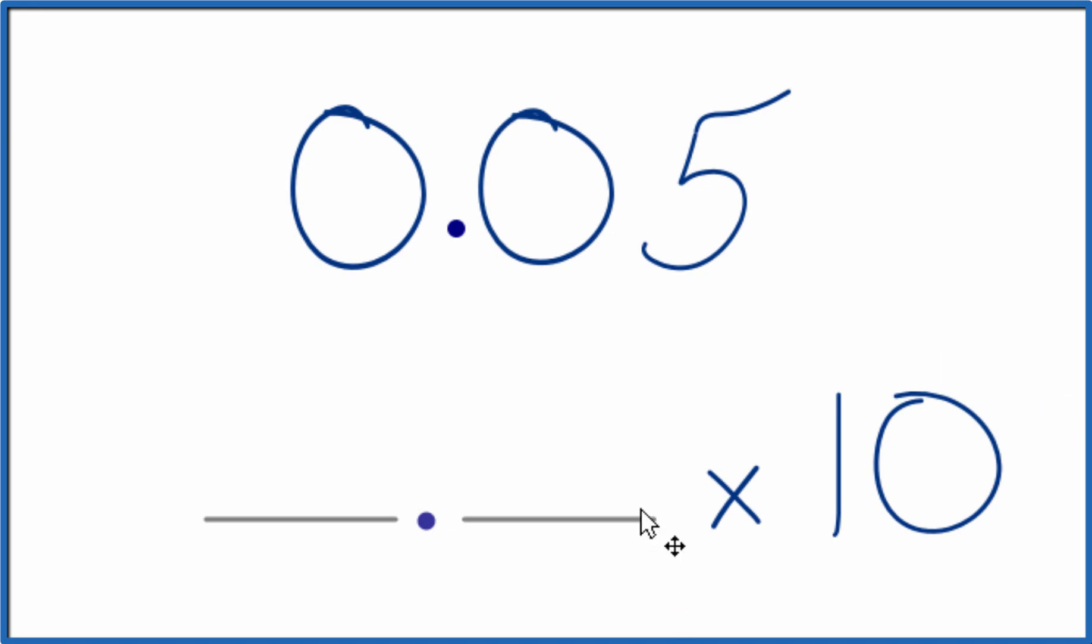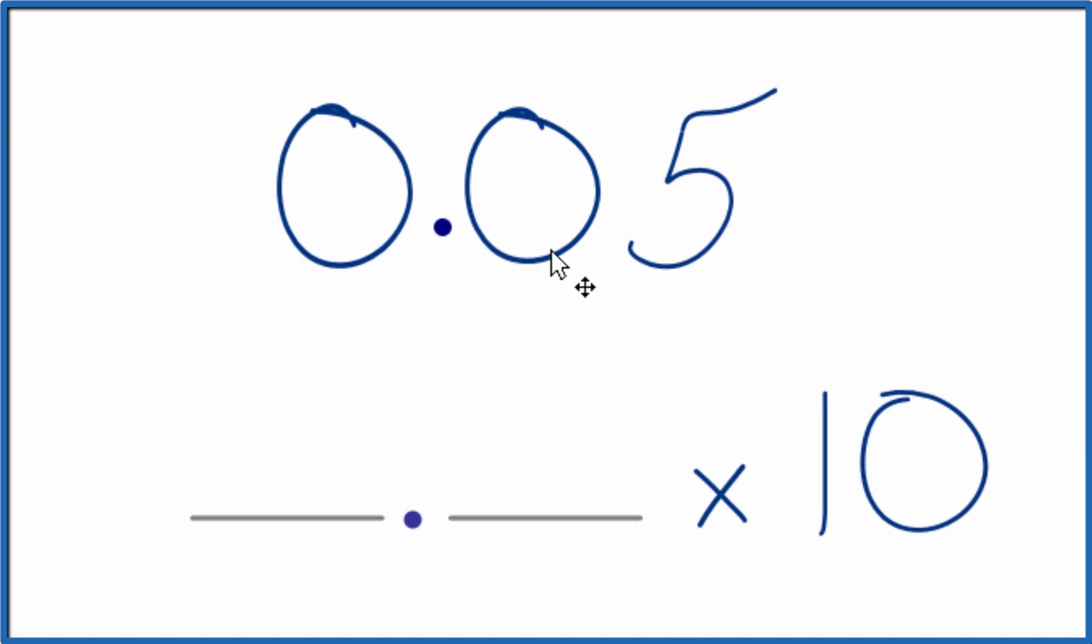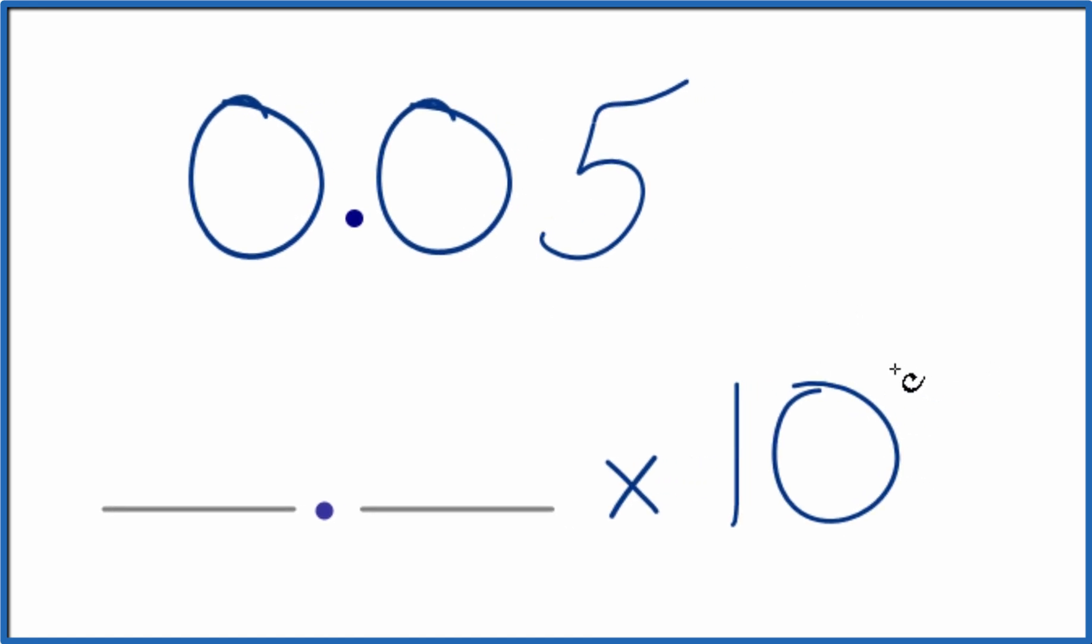So let's figure that out. We know that this is less than 1. 0.05, that's less than 1. That means the exponent is going to be negative since this is less than 1. That's a good start.